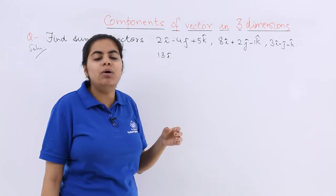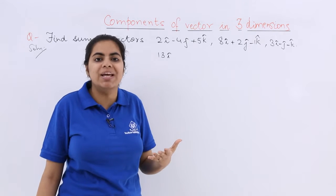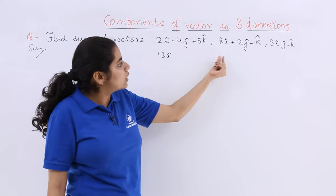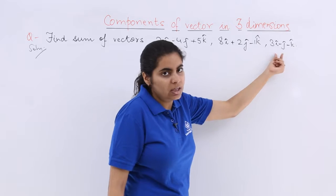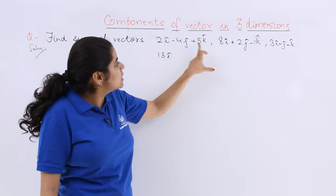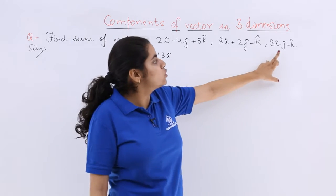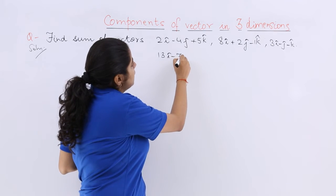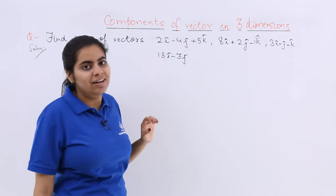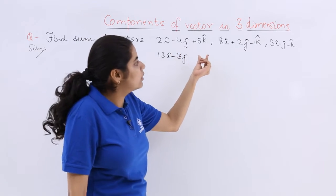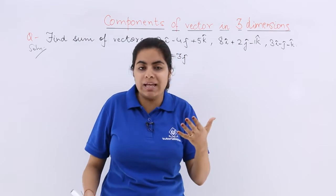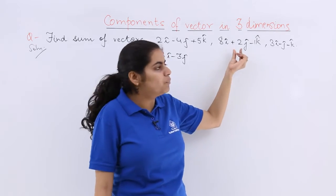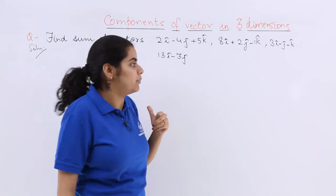Then talking about the y components, j cap. So minus 4 plus 2 minus 1. Minus 4 plus 2 is minus 2. Minus 2 minus 1 is minus 3. So it is simply minus 3j cap. Again I repeat, so this is minus 4. These are not all plus. So you have to take care of the signs. Minus 4 minus 1 plus 2, so it makes it minus 3.